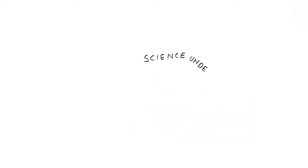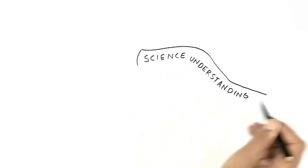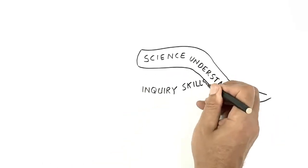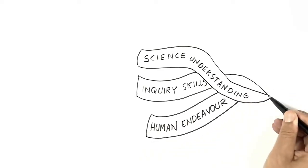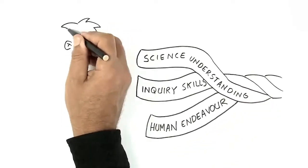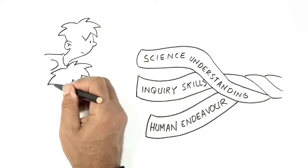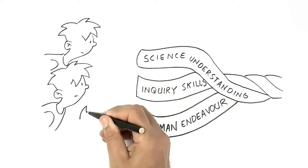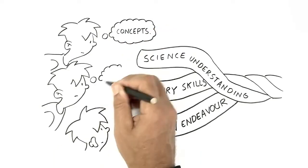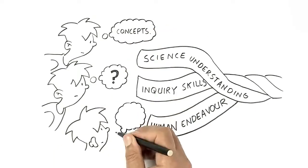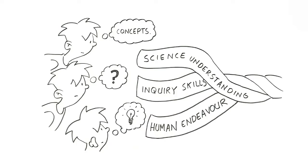When we look at the Australian Curriculum, we see there are three science strands: Science understanding, enquiry skills and science as a human endeavour. None of these by themselves are enough to develop scientifically literate citizens or students to think scientifically. The three strands all have to work together.